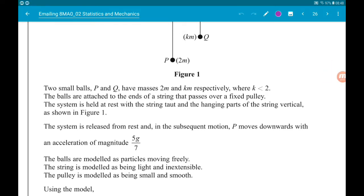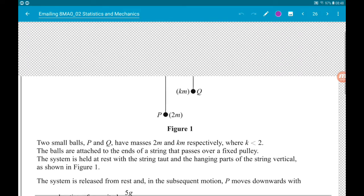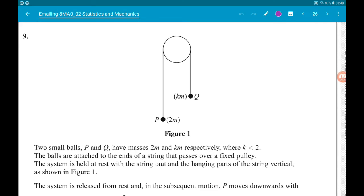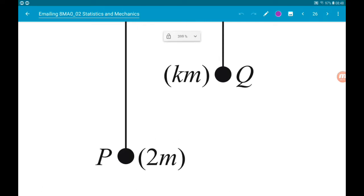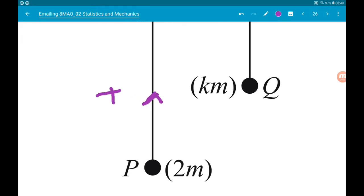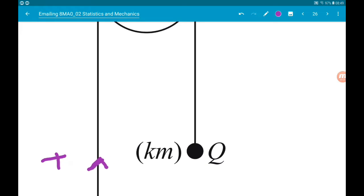Okay, so let's first of all think about then what tension is. Tension is the upwards force acting through the string. So effectively tension is pulling the particles upwards. So we got tension here and we got the same tension over here.